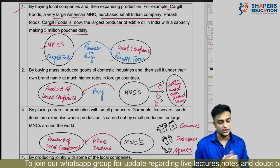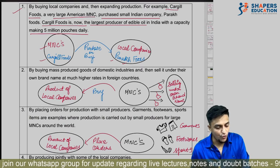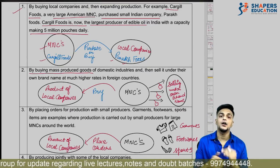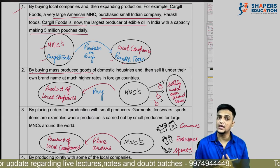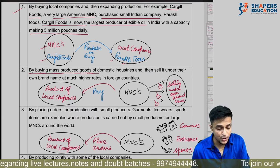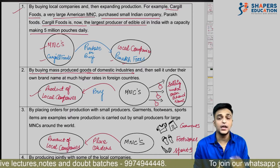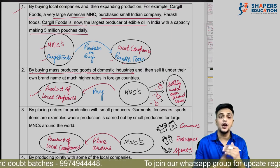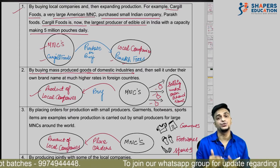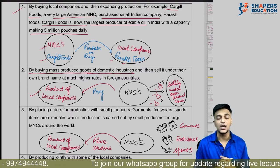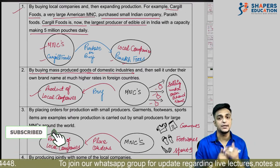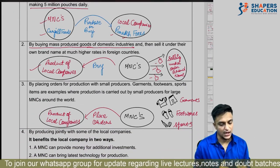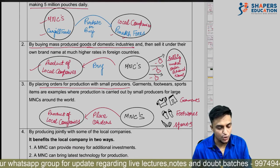The second way: the MNC buys mass-produced goods of domestic industries and puts its own tag/brand name on them, selling them across countries. The MNC buys local products, applies its own brand name, and sells those products globally. So the second method is to buy products from local companies, apply their brand name, and sell them.